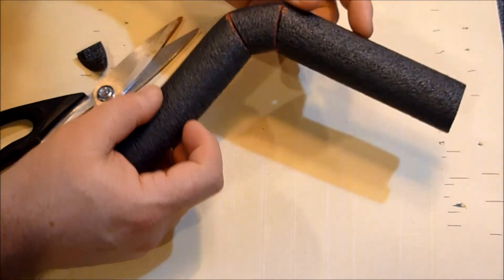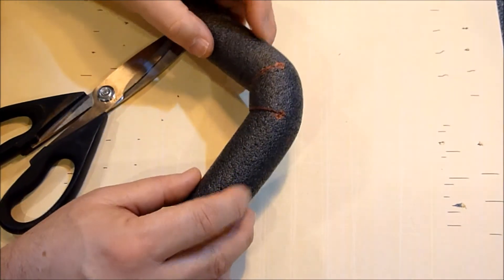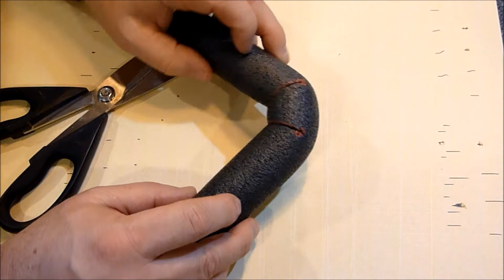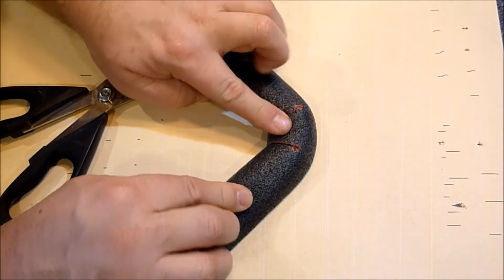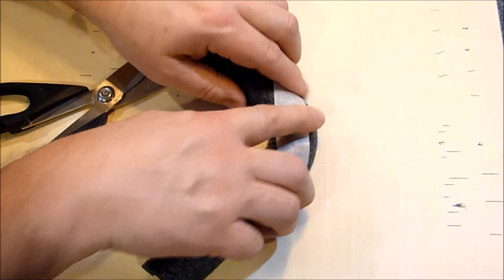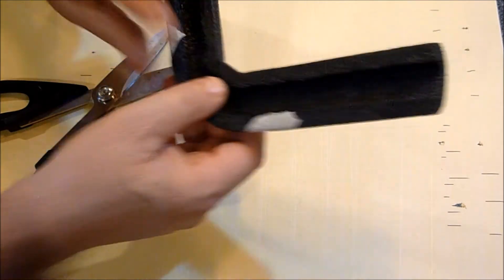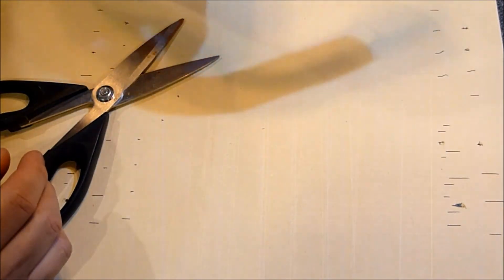Then the only thing left to do is put it together like this. See how I put it together? Run a piece of tape over like this, and now you have a nice 90-degree corner for your roller coaster track.